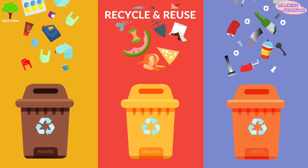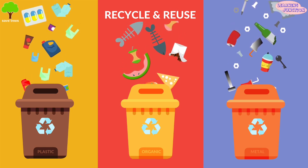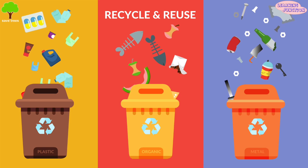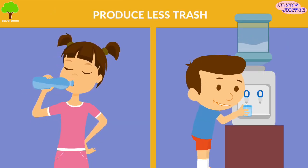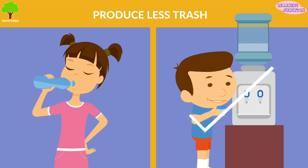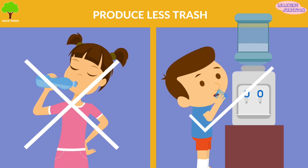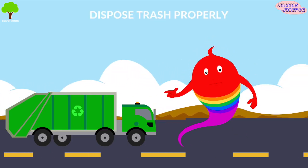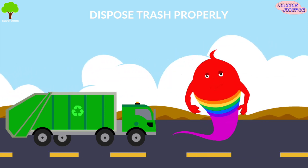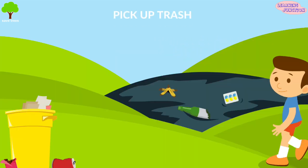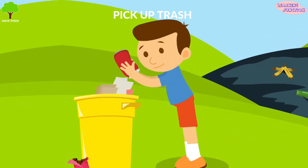Let's see some ways to stop soil pollution. Try recycling and reusing — when you recycle, you add less land pollution, so always recycle and use the correct bin. We should produce less trash; for example, drink water from a glass rather than a plastic bottle. We should also make sure to properly dispose of all trash, and always pick up trash when we see it lying around.